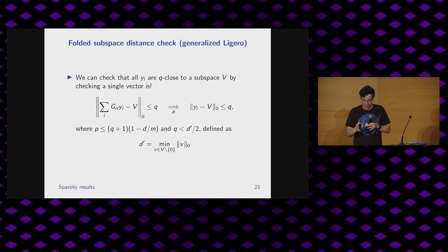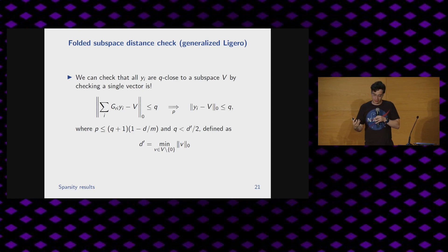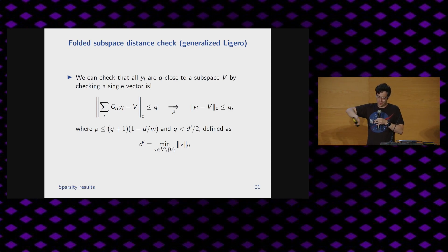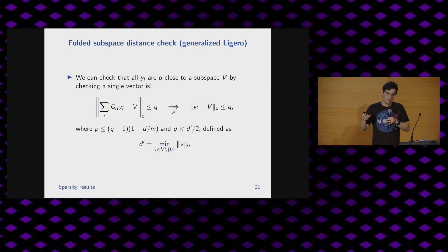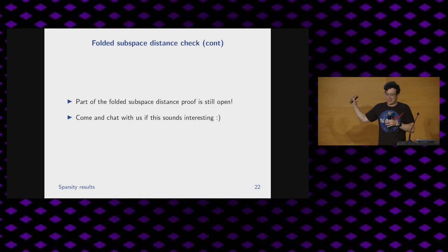Finally, generalized Ligero — almost but not fully proven. You want to check that a bunch of things are close to a certain vector space. Instead of checking every individual element, take a random linear combination of all of them and check that the resulting single vector is close to the vector space. With high probability that implies each of the individual elements must have been close to the vector space. There's a condition on how sparse your thing can be, but that part of the proof is still open. Please come and chat with us if this is interesting.